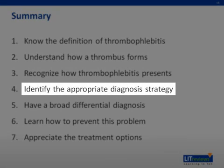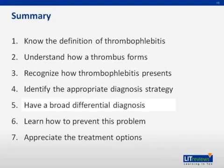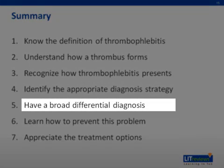Number four, to make the diagnosis includes a history and physical, perhaps checking a D-dimer — though this is very nonspecific — and ultimately an ultrasound is required. Number five, the differential diagnosis includes DVT — which must be remembered first — as well as Berger's disease, venous insufficiency, cellulitis, lymphedema, tendinitis, and varicosities.